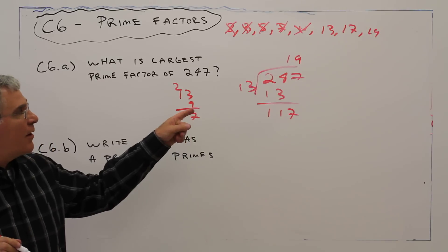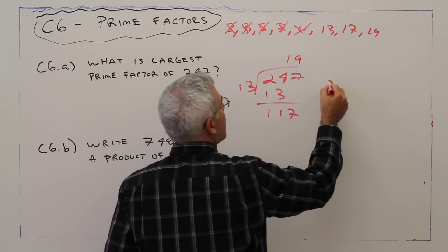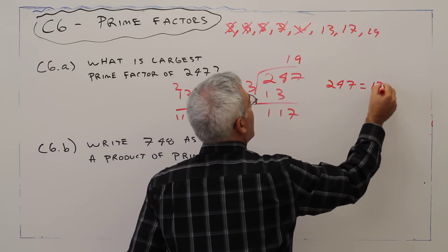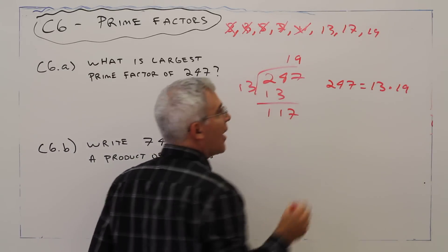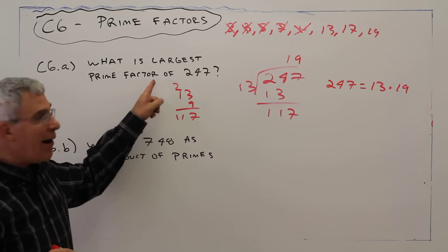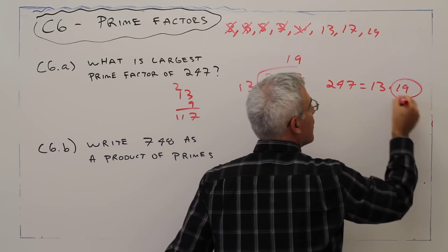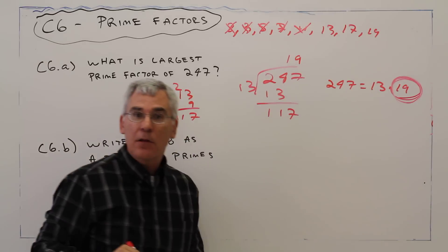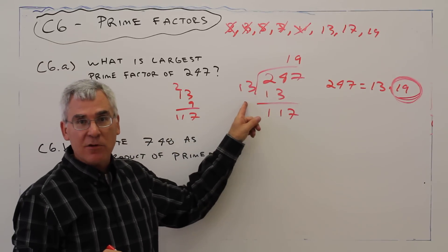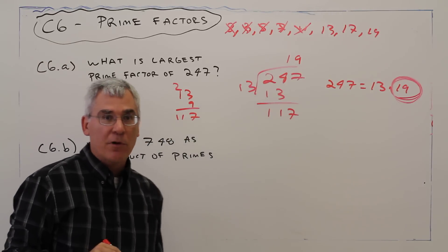So 247 equals 13 times 19. And the largest prime factor is 19. Common mistake, students might say 13 and in that report 19.